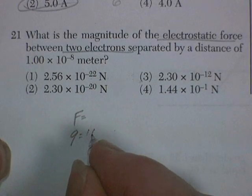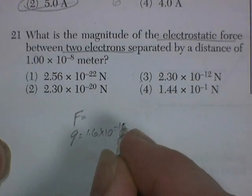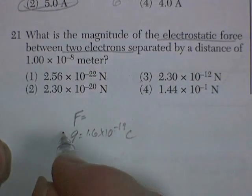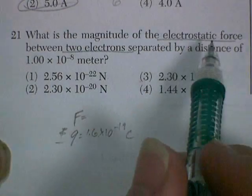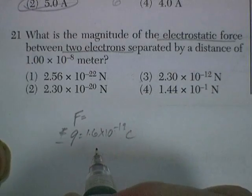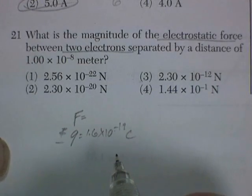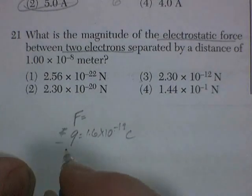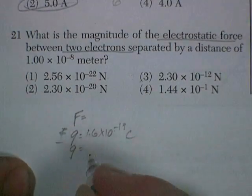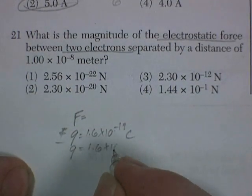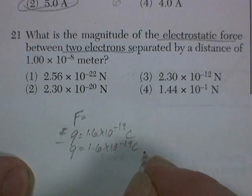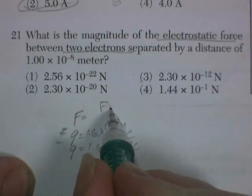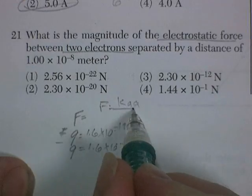So 1.6 times 10 to the negative 19 coulombs. If it was a proton, we'd call it positive charge. In this case, it's an electron. We'd call it negative charge. If there's two of them, it would mean there's a repulsive force. And that repulsive force would push them away. But they're not asking about direction. F equals KQQ over R squared.